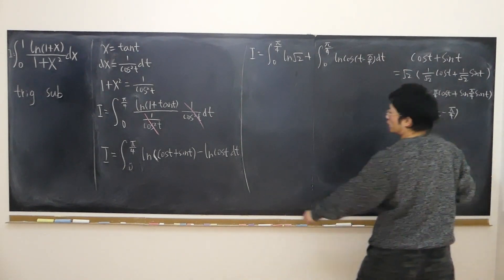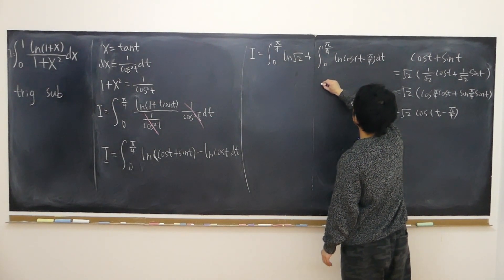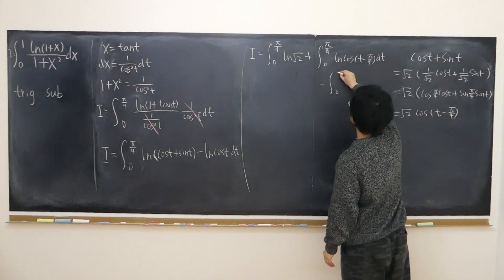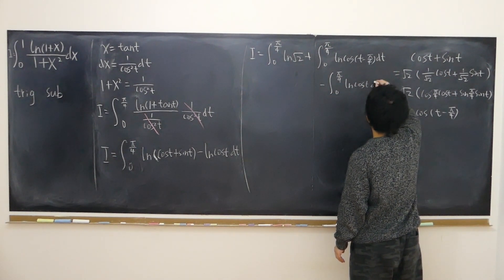Don't forget, there is minus. So again, minus integral from 0 to pi over 4 of log of cosine t dt.